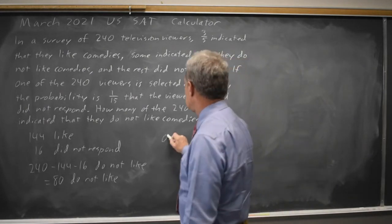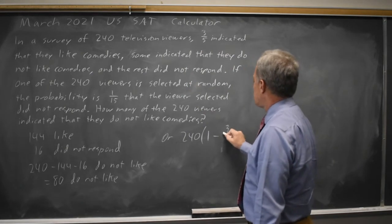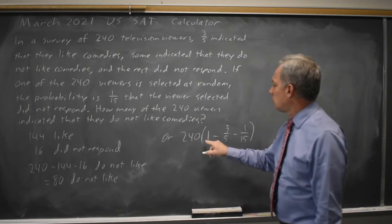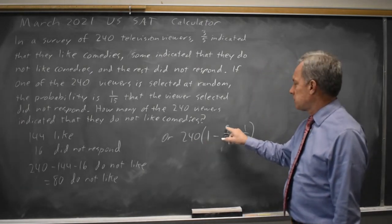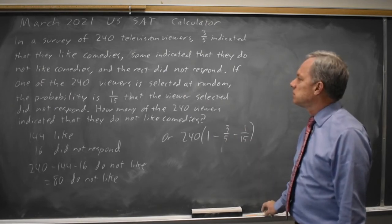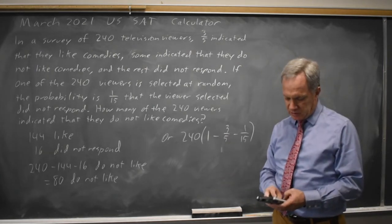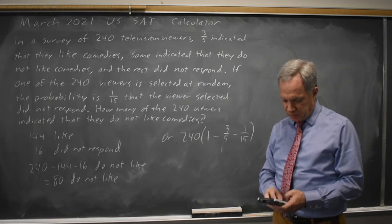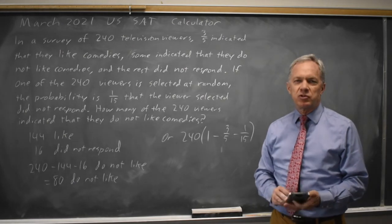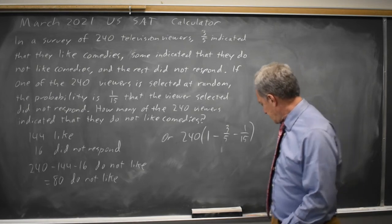You could also take 240 times 1 minus 3/5 minus 1/15. So 1 would be all of them, 3/5 is how many like comedies, and 1/15 is how many did not respond. So this would be the fraction that do not like comedies, and that's 1 minus 3/5 minus 1/15 equals 1/3. So 1/3 of 240 do not like comedies, and 1/3 of 240 is 80, which is our answer.